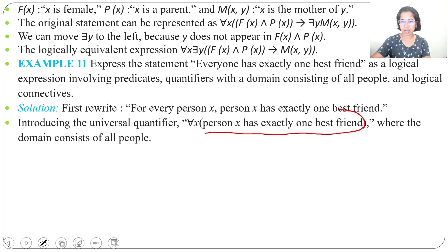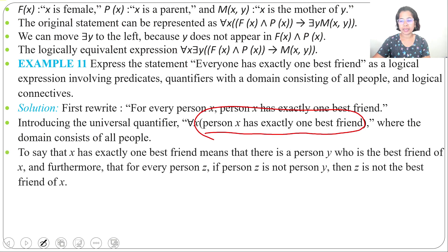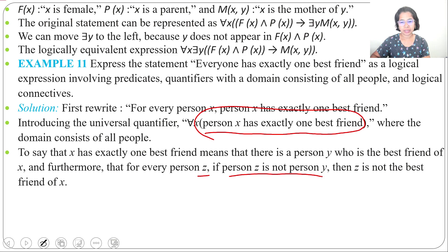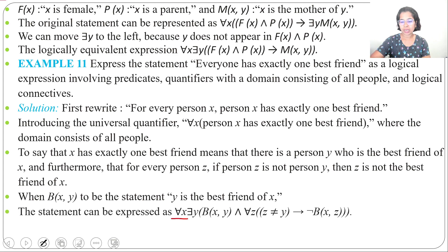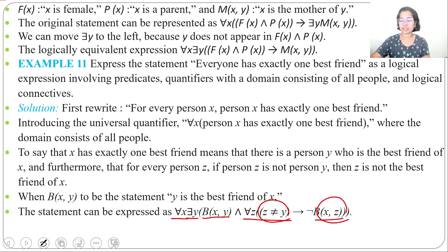Person X has exactly one best friend, which we can write as: there is a person Y who is the best friend of X, and for any person Z, if Z is not equal to Y — meaning Z and Y are different — then Z is not the best friend of X. Let predicate B(X, Y) mean 'Y is the best friend of X'. So: for all X, there exists Y, B(X, Y) and for all Z, Z ≠ Y implies ¬B(X, Z).